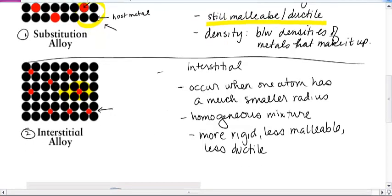Now, density-wise, unlike the other one where we said the density would be between, putting those little atoms in there does not appreciably change the volume. So, since the lattice of those host atoms doesn't expand much,